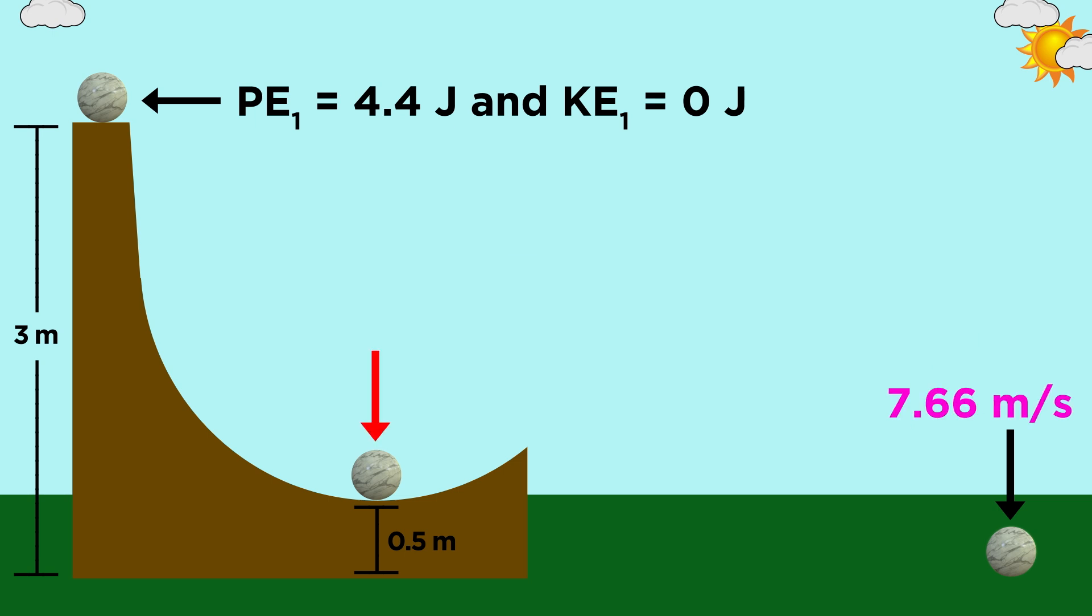Now, for the lowest point of the ramp, let's get the potential energy first, which will be the same mass and acceleration as before, but the height is now half a meter. That gives us a potential energy of zero point seven four joules.